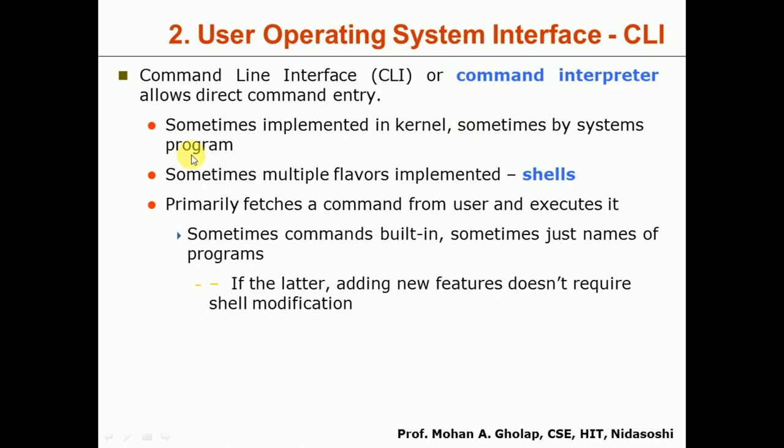CLI can also be implemented through programs. The system maintains a set of programs; whenever a command is executed, every command has an associated program to be run. For example, the 'rm' command removes a file — when you execute it, the system searches for a program named 'rm', loads it, and executes it to perform the desired task. In this way CLI can be implemented through programs.